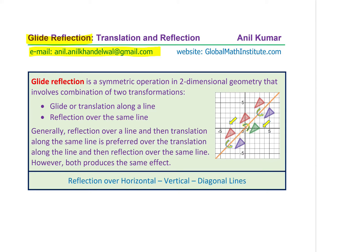Now, what is glide reflection? Glide and reflection — the two words — give us two combinations of transformations. So glide reflection is a symmetric operation in two-dimensional geometry that involves a combination of two transformations, namely glide or translation along a line, and then reflection over the same line. The translation is along a line, and the reflection is on the same line.